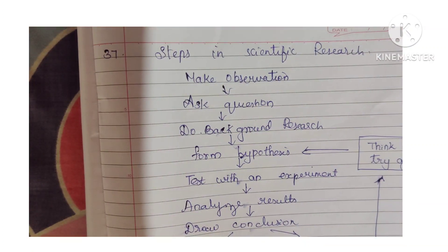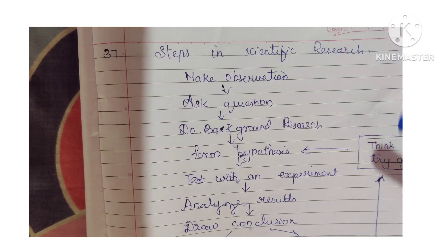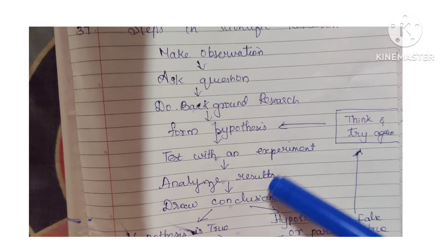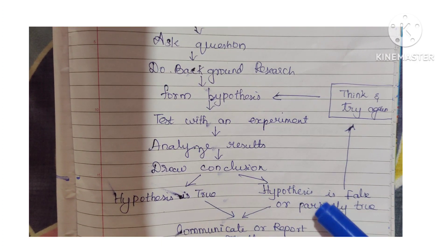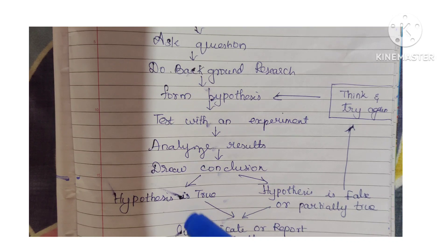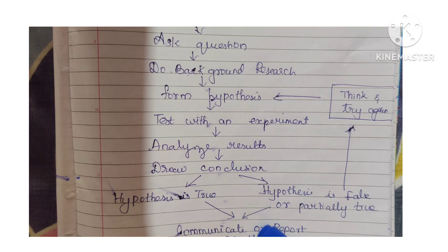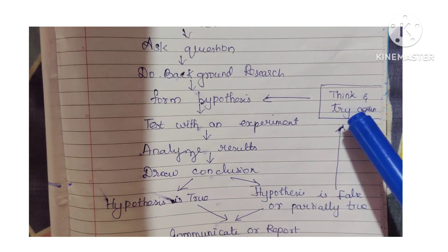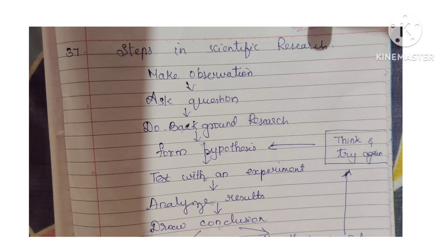Question 37: Steps in scientific research. Make observations, ask questions, do background research, form a hypothesis, test with an experiment, analyze the results, draw a conclusion. If the hypothesis is true, communicate the findings or report results. If the hypothesis is false or partially true, think again, try again, and formulate a new hypothesis.